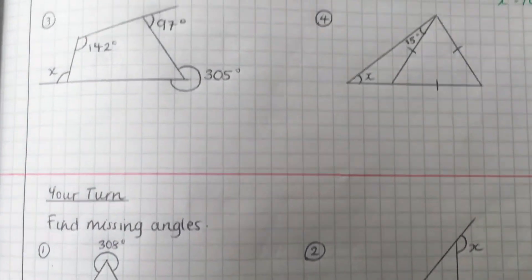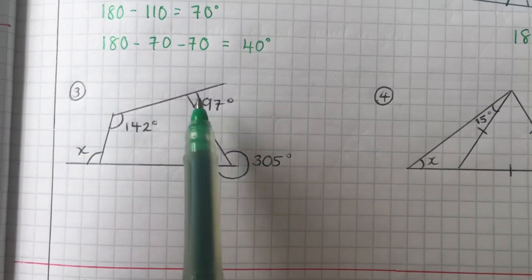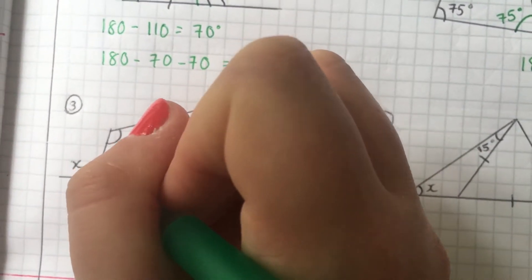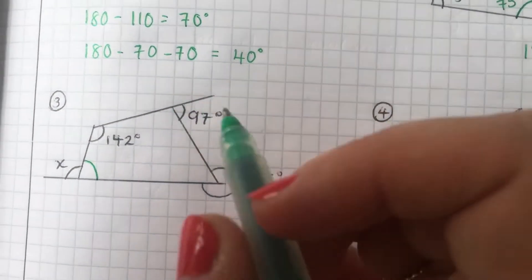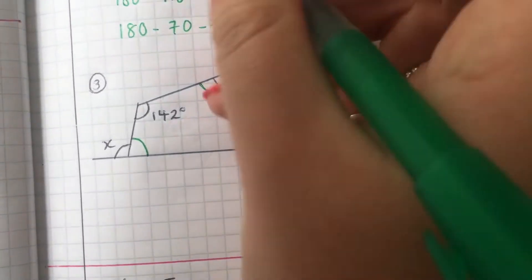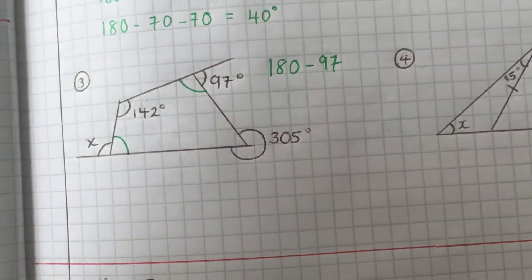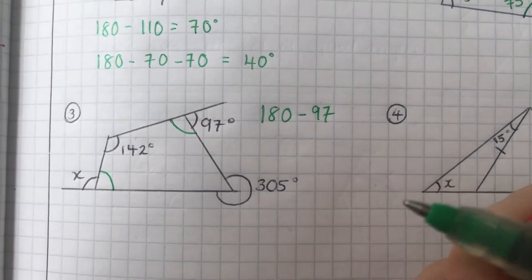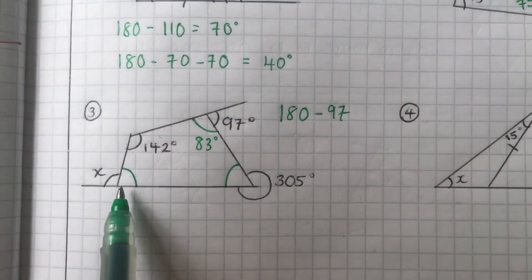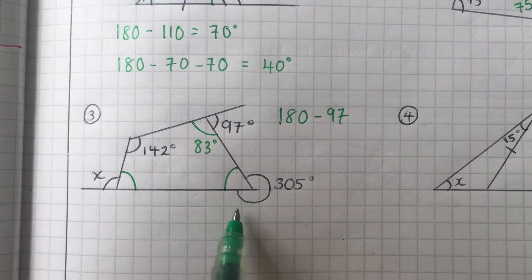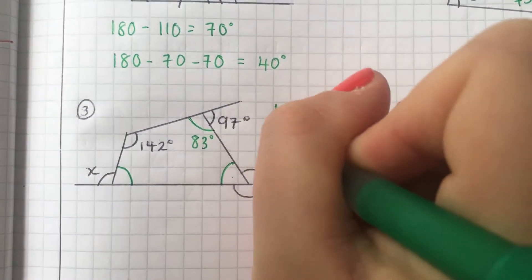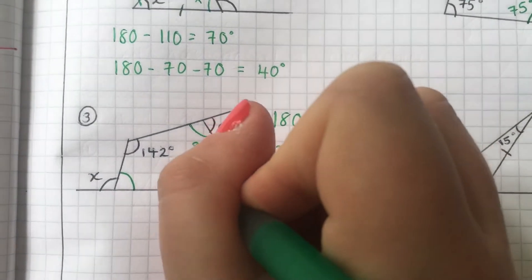Next question. We've got a four-sided shape again, and we're looking for x. We can work out x because it's on a straight line with another angle, but first we need to work out that angle, which requires knowing all angles of the quadrilateral. One angle is on a straight line with 97, so we do 180 minus 97 to get 83 degrees. We also need another angle: we know that all of that region is 305, and angles around a point are 360, so we do 360 minus 305 to get 55 degrees.